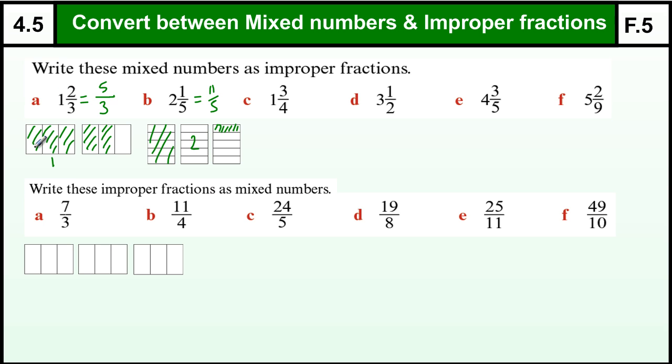If I take this 1 and realize that that 1 has 3 things in it because they are thirds, I can work out how many that is going to be by doing 1 times 3 to get those 3, plus the 2 on the top makes 5. So 5/3 comes from that. If I do 2 times 5 because I have 2 lots of 5...